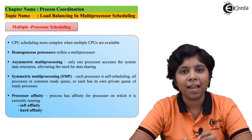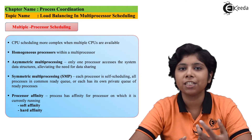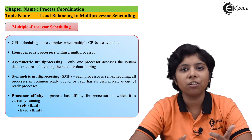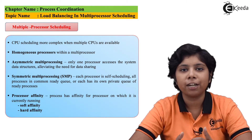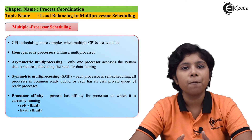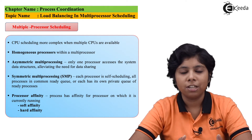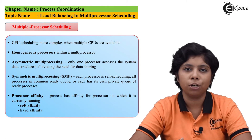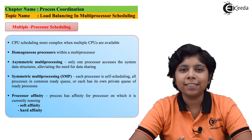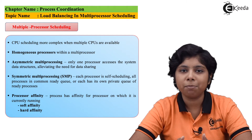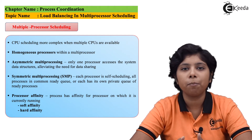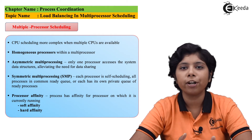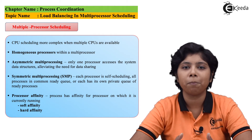When a processor becomes idle, it can pull processes from a non-idle processor. However, push migration only happens when the overload exceeds a certain threshold — only then does a process move from one processor to another. As is often the case in system engineering, there is no hard rule about which policy is best; it must be chosen according to the needs of the system.